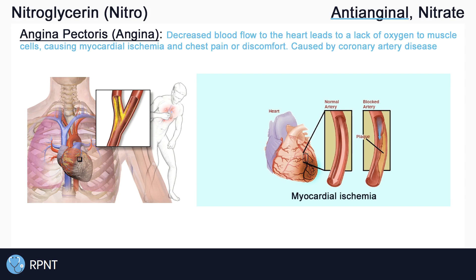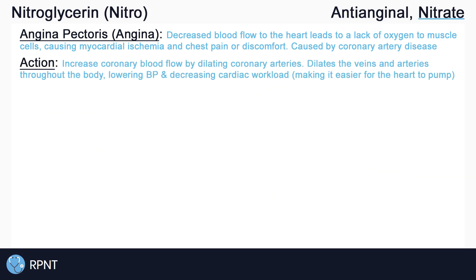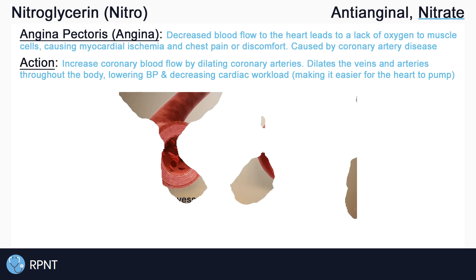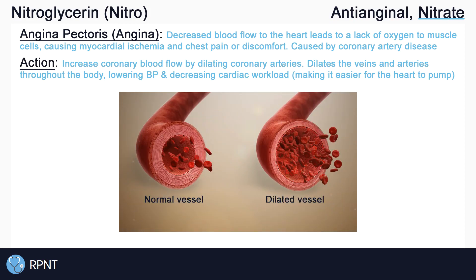Normally, the pain experienced by angina can be relieved with rest, because while resting, the heart can receive more blood and oxygen. However, if the pain is not relieved with rest, nitroglycerin becomes an option for treatment. To help with the narrowing of the coronary arteries, nitrates increase coronary blood flow by dilating or relaxing coronary arteries. Nitrates also dilate the veins and arteries throughout the body, also known as vasodilation. Vasodilation lowers the client's blood pressure, making it easier for the heart to pump, which decreases cardiac workload.